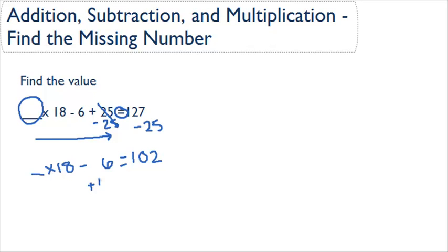So to do the opposite of that, we're going to add 6. So if we add 6 to each side, we'll cancel out our 6s here, and 102 plus 6 is 108.